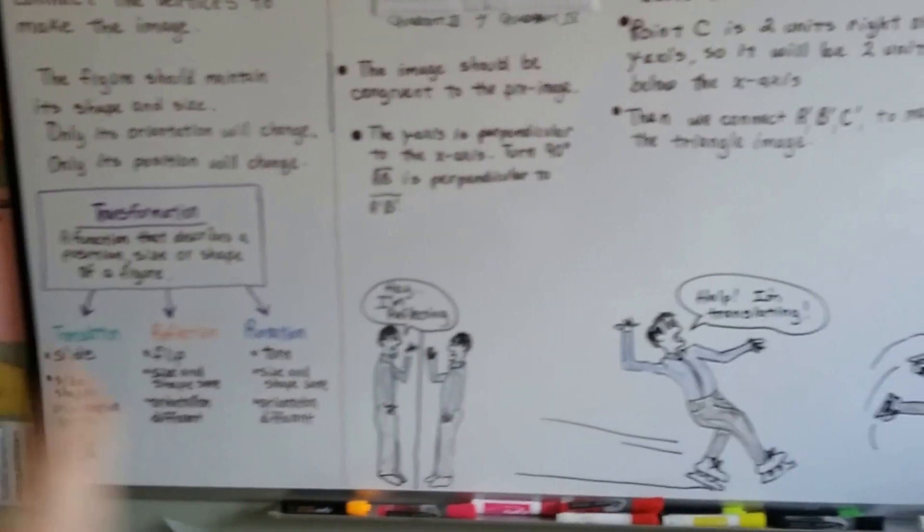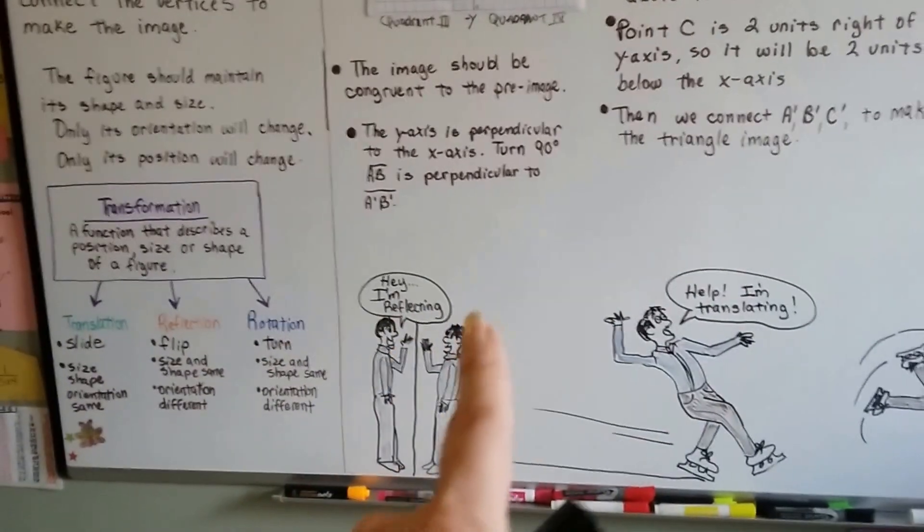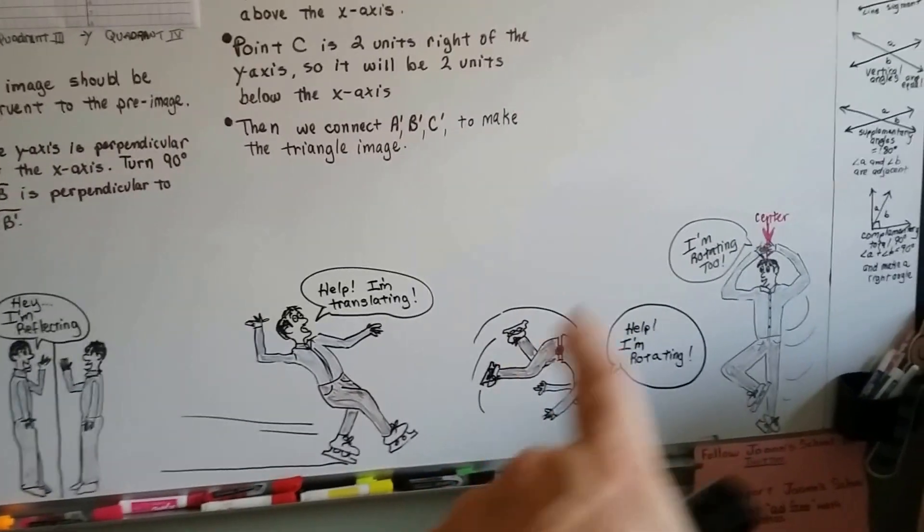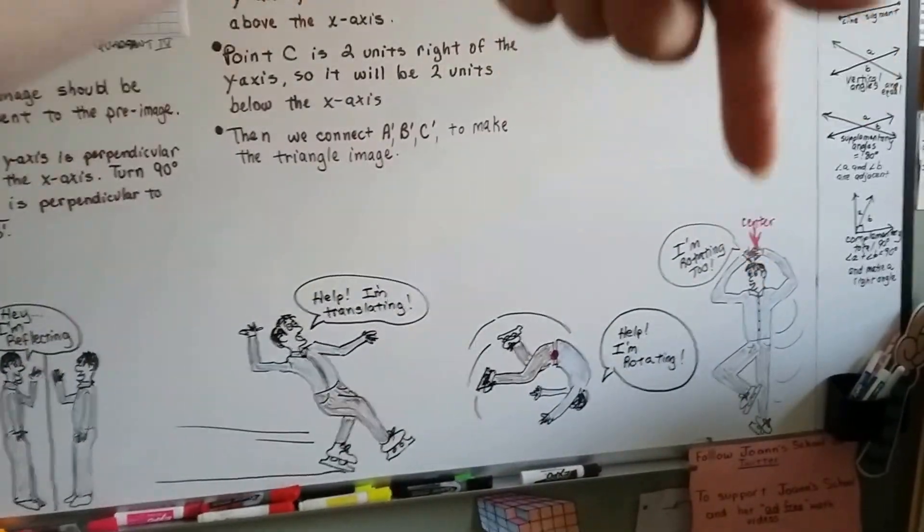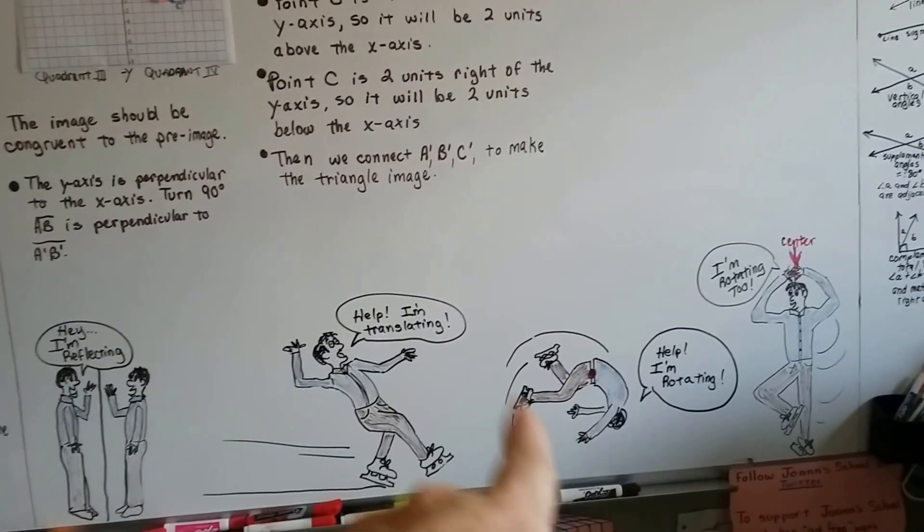So, we did translations, which is the sliding. We did reflections, which is the flip, like a mirror image. And we did rotation, which is turning around a center point, a point of rotation. See that? In this one, it says belt, and he's going around like that.